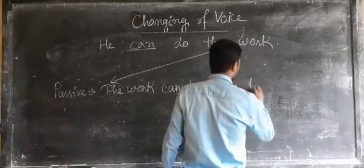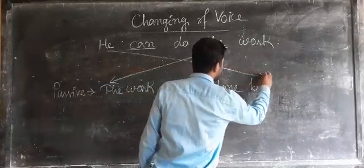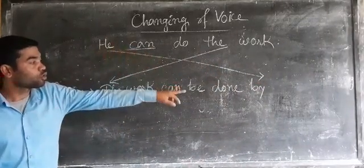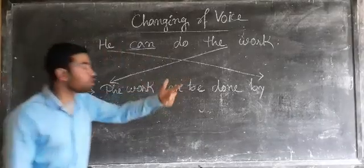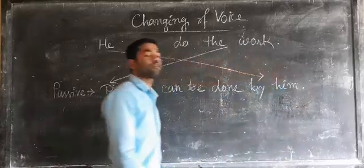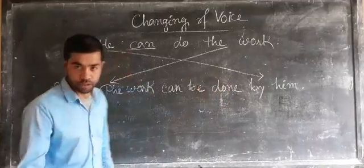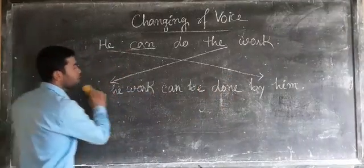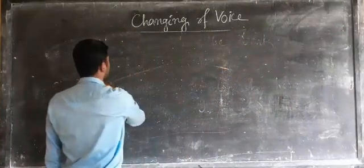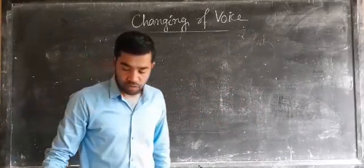So: 'The work can be done.' Next we need the preposition 'by.' The subject of active voice — 'he' — will become the object of passive voice, converted to 'him.' So the complete passive sentence is: 'The work can be done by him.' This is the system for changing the voice, and it can be used in assertive sentences.